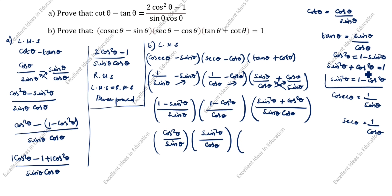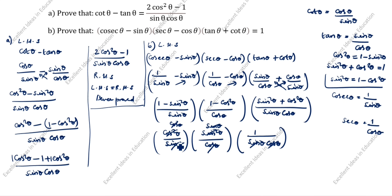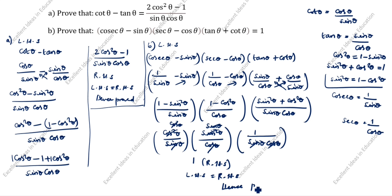Open the bracket: sin²θ plus cos²θ equals 1. So we will take 1, divided by sin θ cos θ. Now we cancel: cos²θ over sin θ, times sin²θ over cos θ, times 1 over sin θ cos θ. After cancellation, 1 sin and 1 cos remain and cancel, leaving the result as 1. This is RHS. LHS equals RHS equals 1. Hence proved.